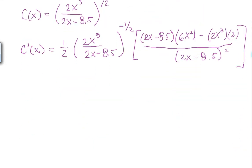Now this becomes what? We're simplifying the derivative. This to the minus 1 half is just flipping this around to the 1 half. Here we have 12X cubed minus 6 times 8.5 X squared minus 6X cubed.